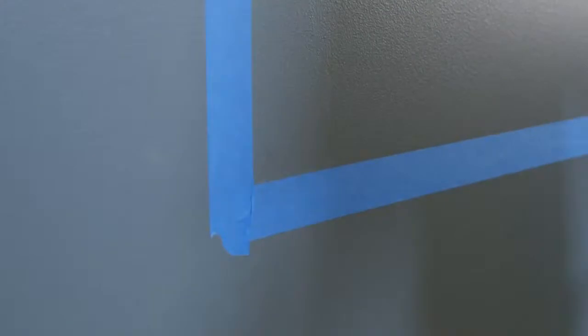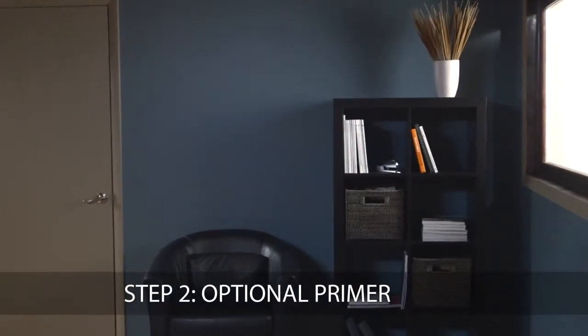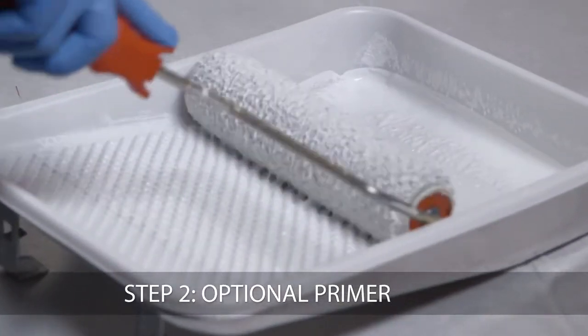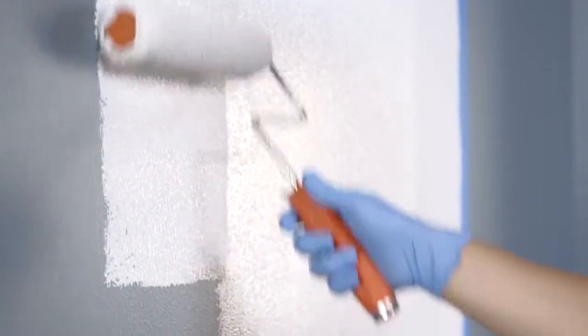If you're applying dry erase paint to a drywall surface that is already painted in a light color, primer is not needed. To cover darker surfaces and bare surfaces, we strongly recommend using a primer to ensure superior adhesion and coverage.